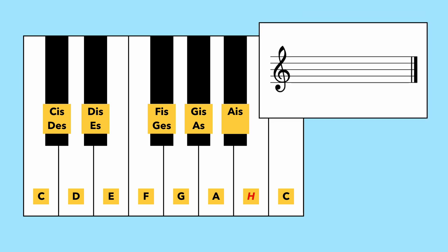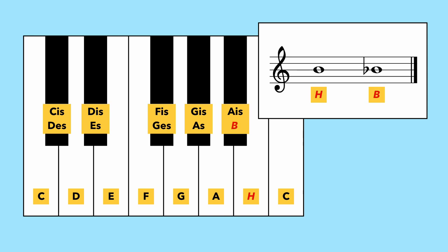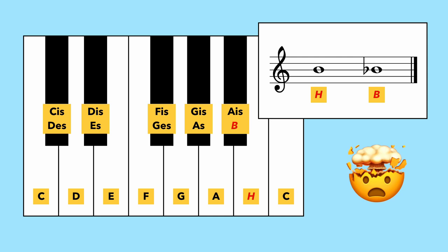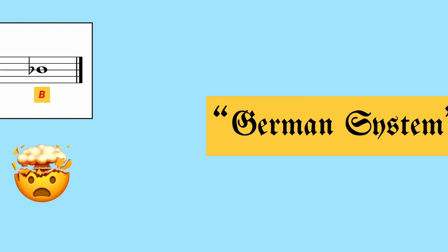With one little exception: a flattened H is not called H flat or HES as one might think, but simply B — just B, without any suffix. What a perfect way to make life more difficult, right? And this has led to plenty of misunderstandings between musicians across borders.